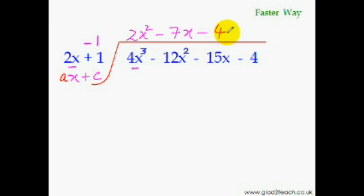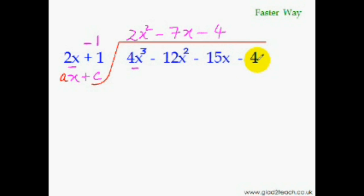If you want to find the remainder, just carry on with the process. Multiply minus 1 with minus 4 and add it to the next term of the dividend. Minus 1 times minus 4 is plus 4. Plus 4 minus 4 is 0, so the remainder is 0.